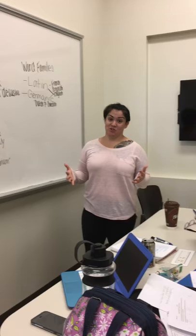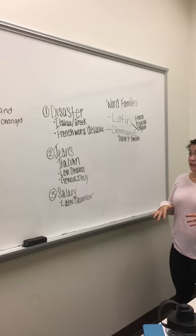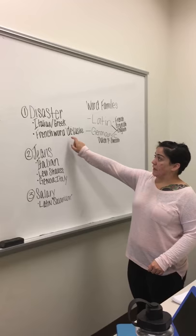We've got three examples that we're going to go over today so you understand what the origin of a word — its etymology — means. The first word is disaster. The origin is in Italian and Greek. It's linked to the French word 'disastre,' with 'di' meaning bad, and 'aster' meaning star.